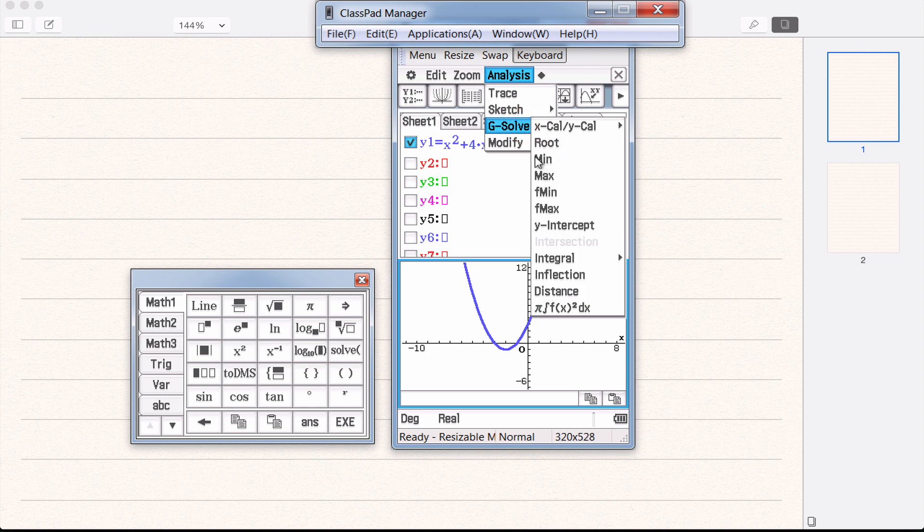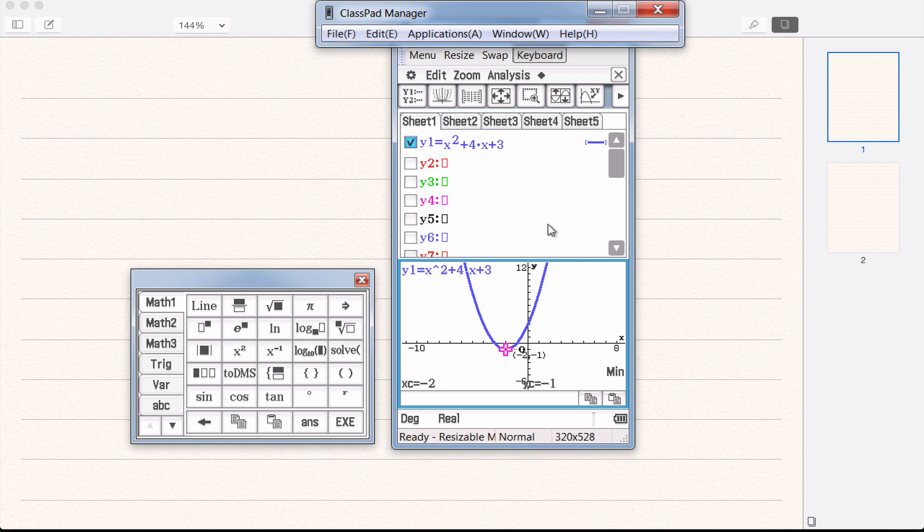Next on the list is minimum and maximum. This graph is a positive parabola, so it's going to have a minimum. So we can't find a maximum, but we can find the minimum. Click on minimum and it will give it to you there, negative 2, negative 1. Bit hard to read, luckily it's down here. And if you can't see it, click and it will show up at the bottom.